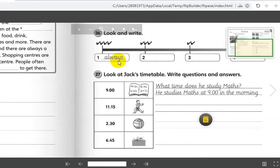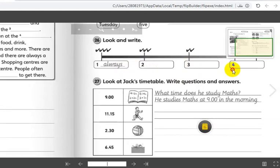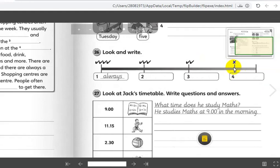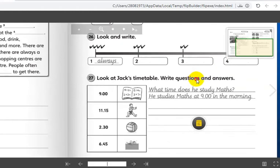So here, my dear students, always, here usually, write usually here. And here, often. And the last one, of course, is never. It's one tick. So, pause the video, write the answers, take your time. Now, move down to the last one, the last exercise, 27.